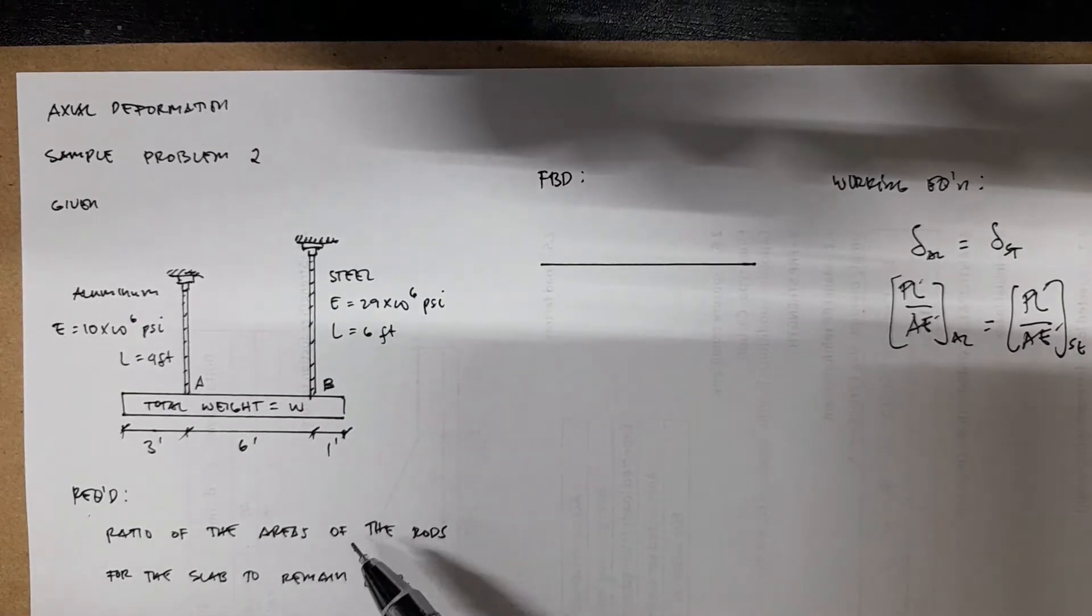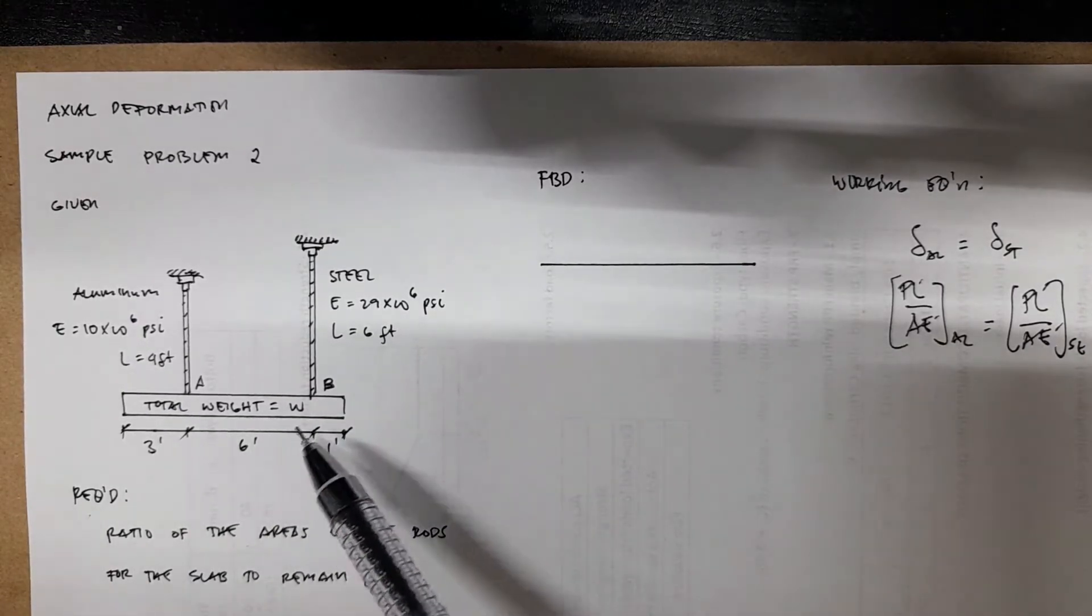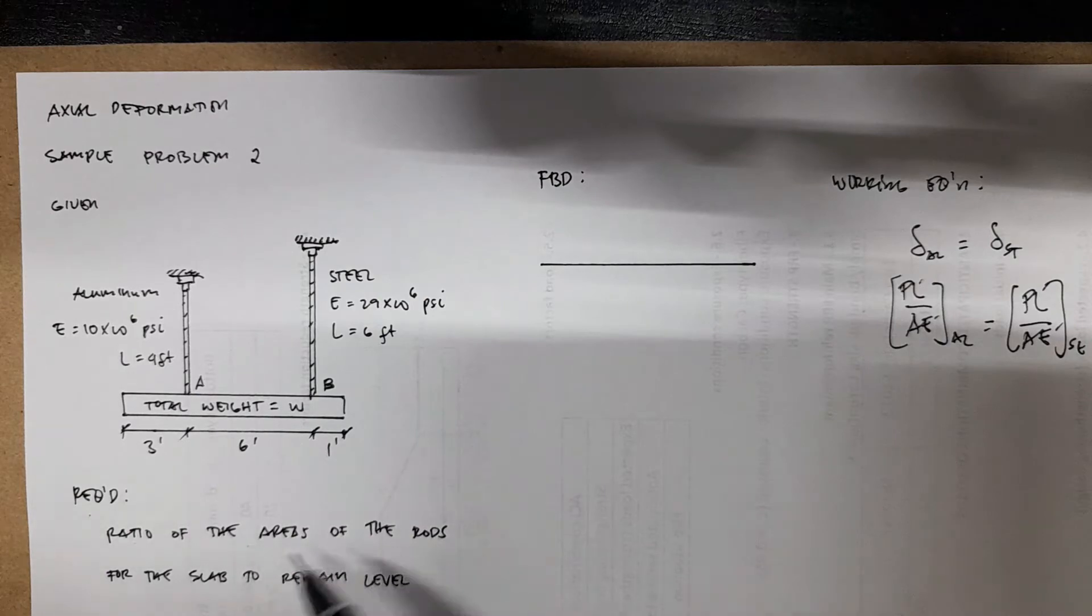In this problem, we're asked to find the ratio of the areas of the rods. These are the cross-sectional areas of the rods so that the slab will remain level.